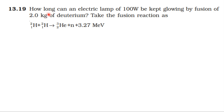From the NCERT textbook, nuclear topic, question 19: How long can an electric lamp of 100 watt be kept glowing by fusion of 2 kilogram of deuterium? The fusion reaction is: deuterium plus deuterium combines to give helium-3 isotope plus neutron, with energy release of 3.27 million electron volt.